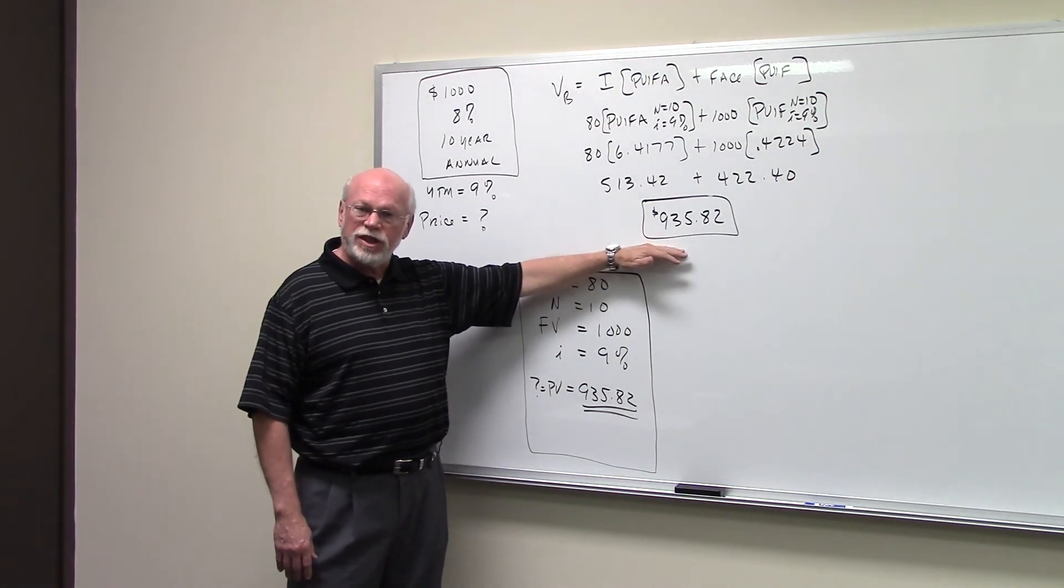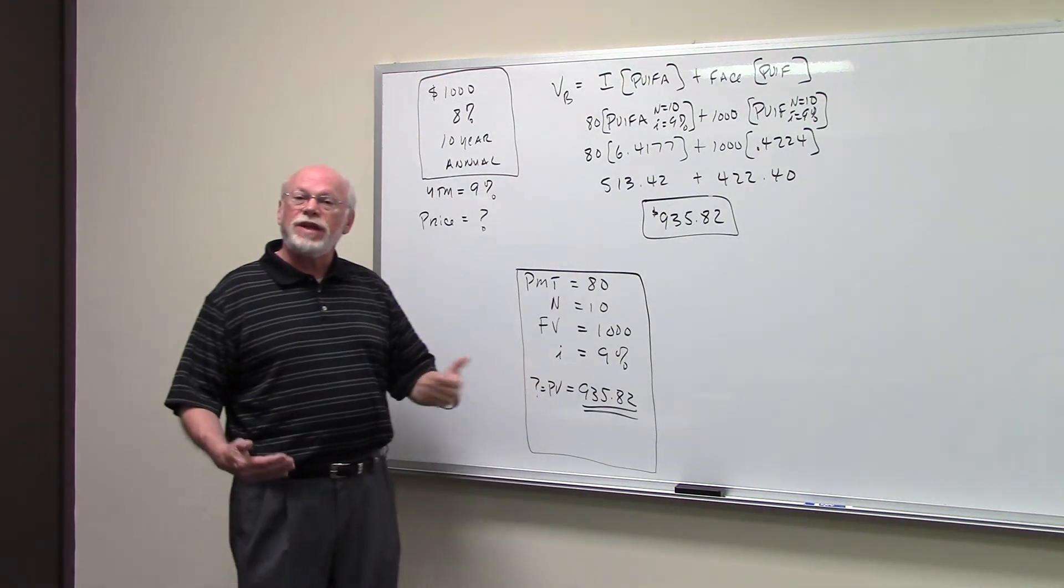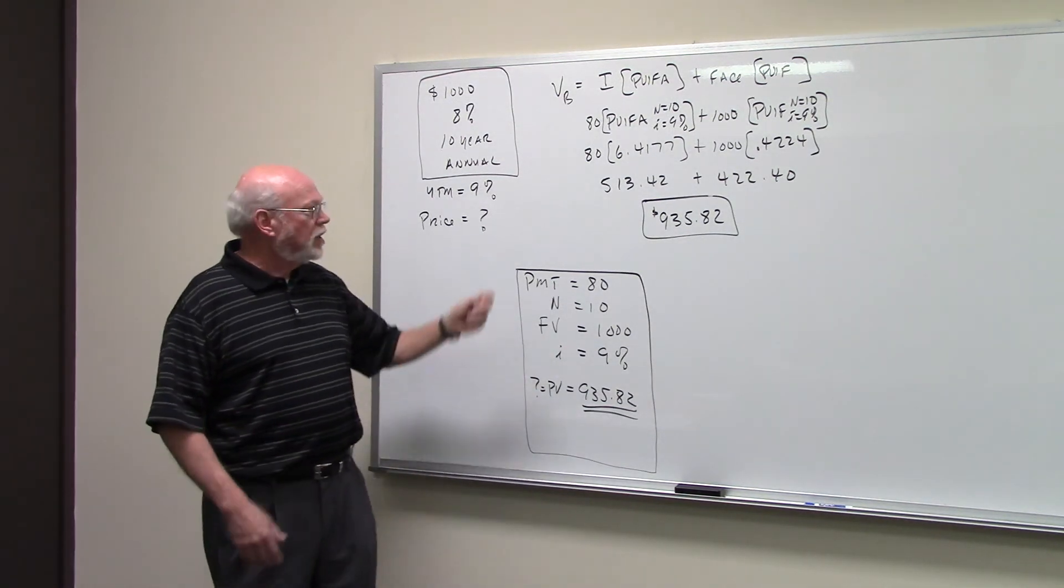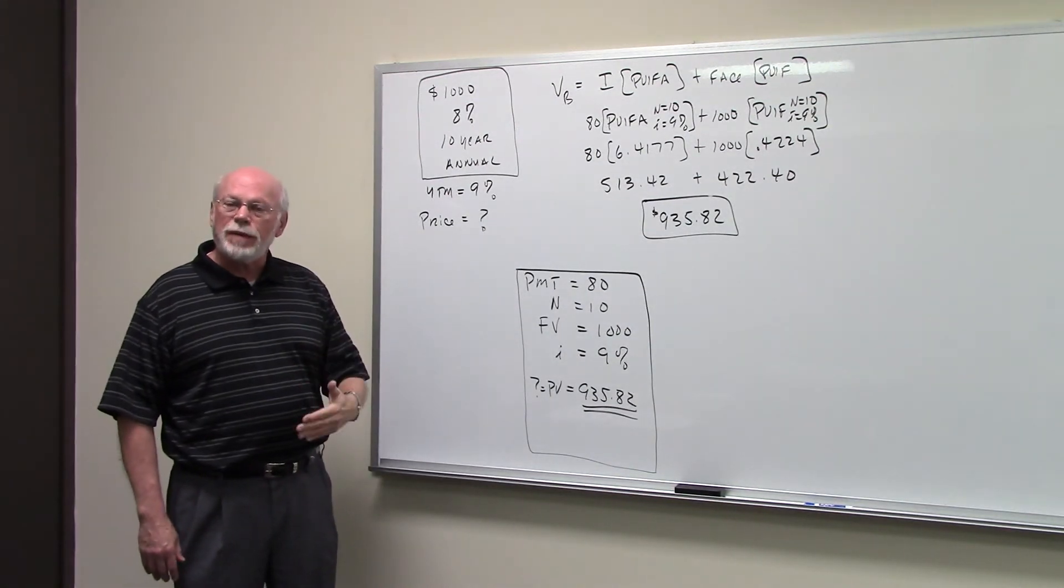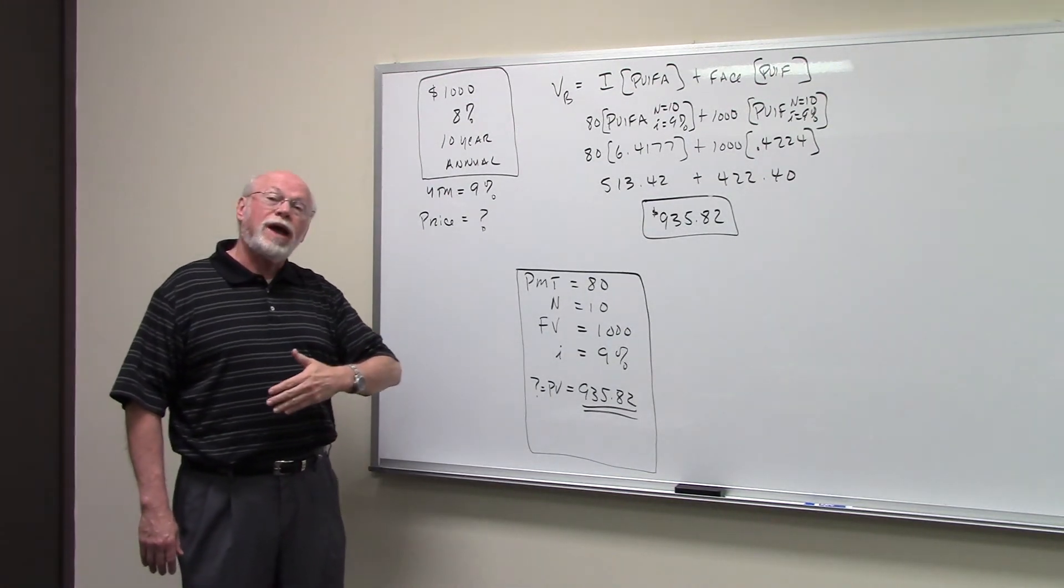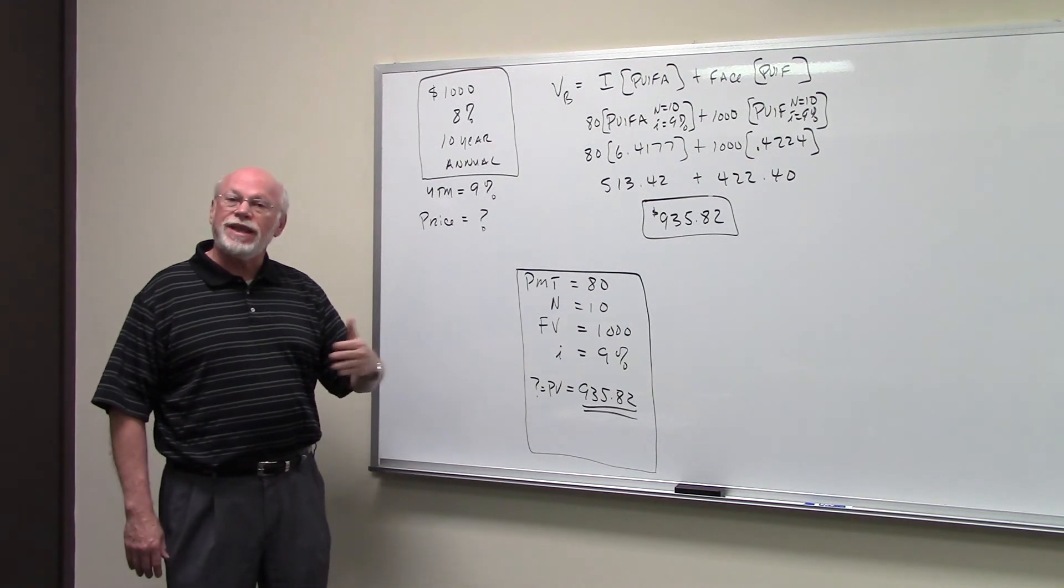Because if we did, we'd get a return less than 9%. If we could buy the bond in the market for less than this, then we would, because we'd get a return greater than 9%. So the yield to maturity is your required return, your minimum acceptable return. We don't mind getting more return, but we don't want to get anything less than that.